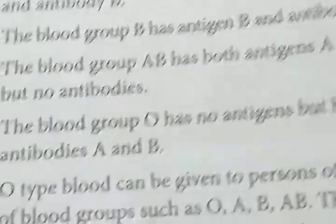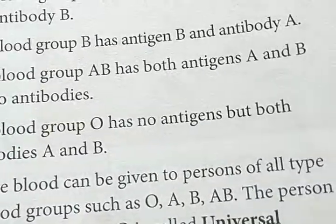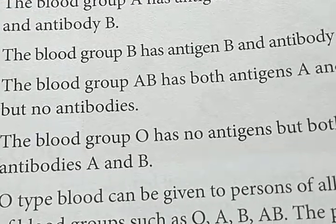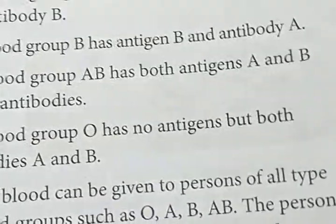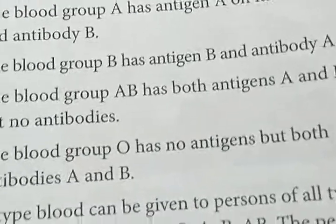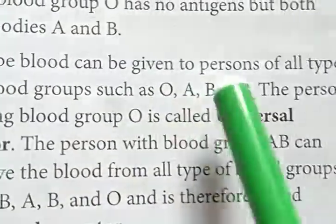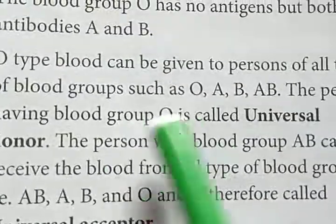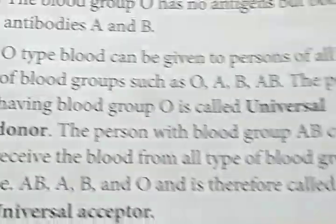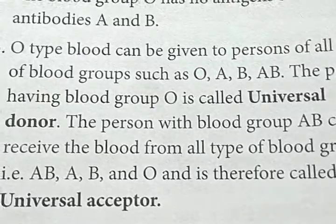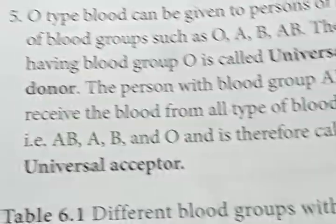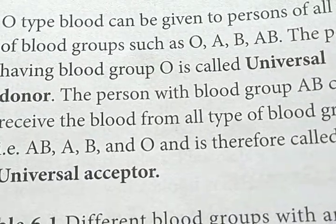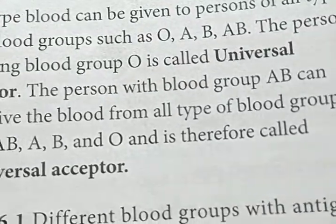Blood group O has no antigens A or B. O type blood can be given to persons of all blood groups — O, A, B, and AB — because there is no antigen. Therefore, the person having blood group O is called a universal donor. The person with blood group AB can receive blood from all types — A, B, and O — and is therefore known as the universal acceptor or universal recipient.